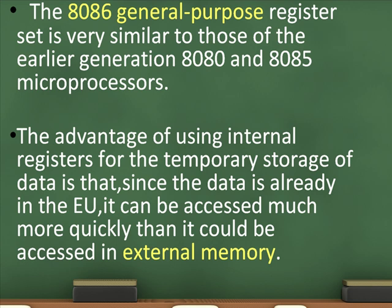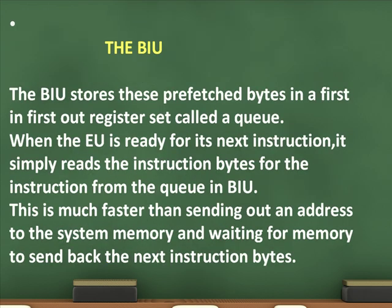The advantage of using internal registers for temporary storage of data is that since the data is already in the EU, it can be accessed much more quickly than it could be accessed in external memory. The BIU stores prefetched bytes in a first-in first-out register set called a queue. When the EU is ready for its next instruction, it simply reads the instruction bytes from the queue in the BIU, which is much faster than sending out an address to system memory and waiting for memory to send back the next instruction bytes.